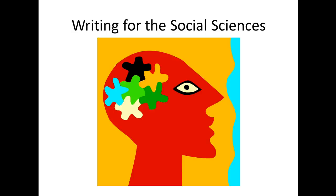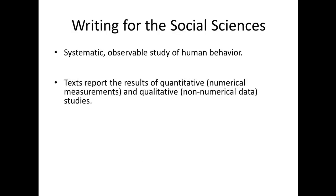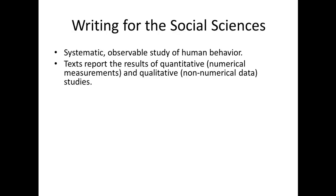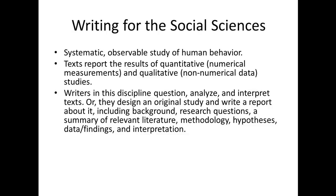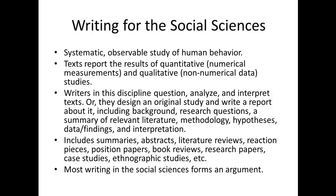When writing for the social sciences, systematic, observable study of human behavior is the key. Texts report the results of quantitative — that's numerical measurements — and qualitative, or non-numerical, data studies. Writers in this discipline question, analyze, and interpret texts, or they design an original study and write a report including background, research questions, a summary of relevant literature, methodology, hypotheses, data and findings, and interpretation. Writing for the social sciences includes summaries, abstracts, literature reviews, reaction pieces, position papers, book reviews, research papers, case studies, and ethnographic studies. Most of the writing in social sciences forms an argument.